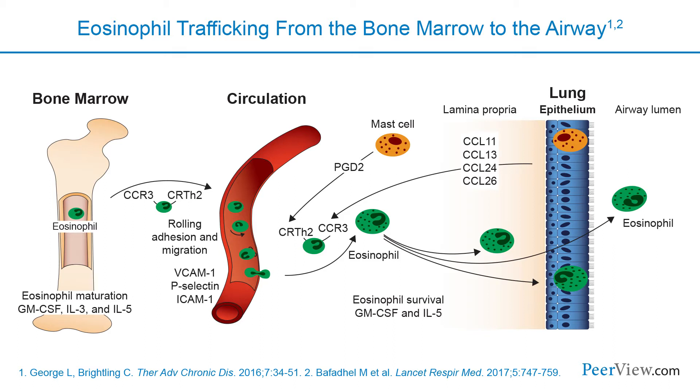Eosinophilic inflammation can be measured in the airway by sputum analysis and bronchoscopic sampling. Blood eosinophil counts have been used as a surrogate for eosinophilic airway inflammation and to determine the intensity of eosinophilic inflammation in the blood compartment. Studies have shown a moderate correlation between blood eosinophil count and sputum eosinophil count. Additionally, sputum IL-5 levels have been shown to be significantly higher in patients with high eosinophil counts versus low eosinophil counts.